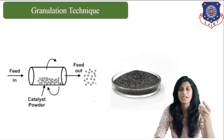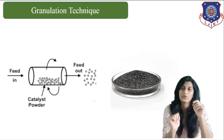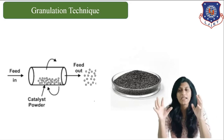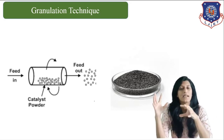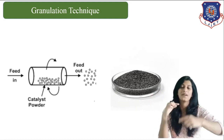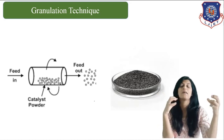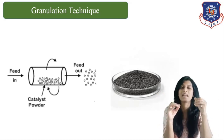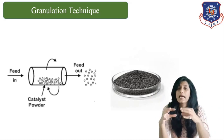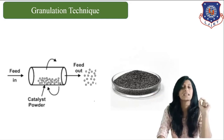After pellet formation, another technique is granulation. In granulation, as shown in the figure, there is a rotating cylinder. We feed the catalyst powder — that is the precipitate — inside the cylinder and rotate it at high speed. When the cylinder is rotated at high speed, the powdered form of catalyst combines together to give granular forms. Small particles combine together due to the centrifugal force and form granules as seen in the picture.